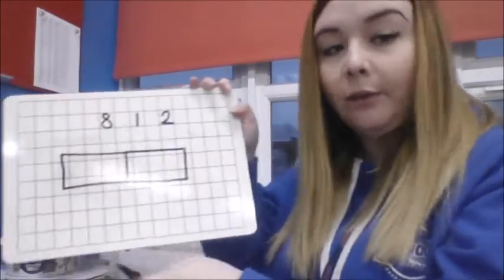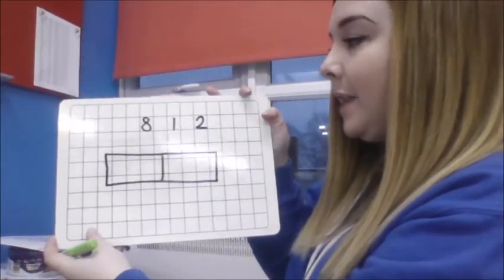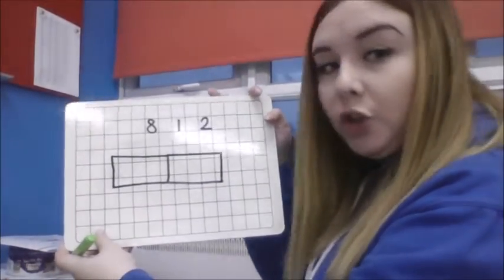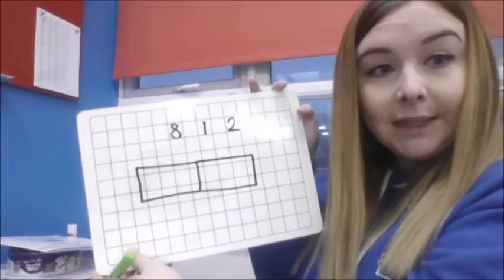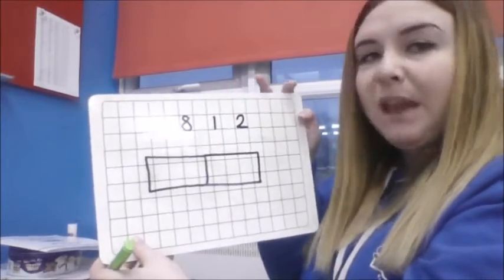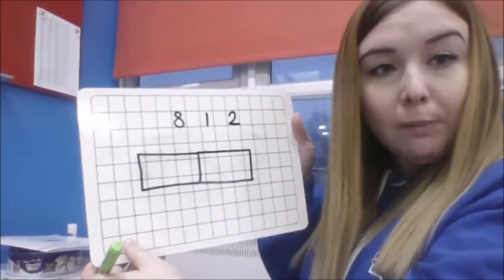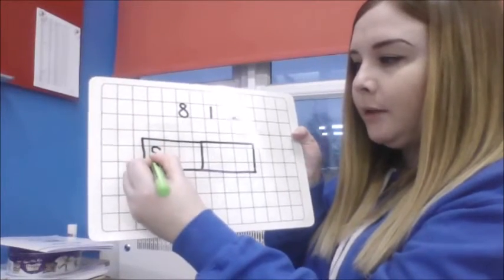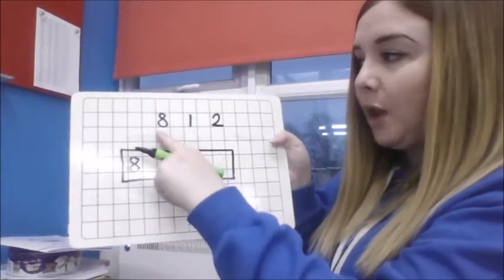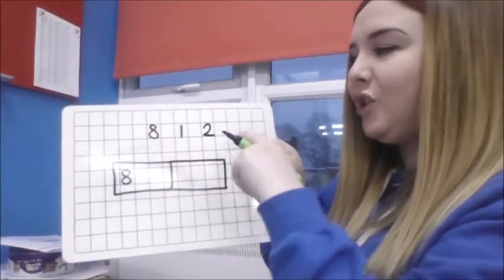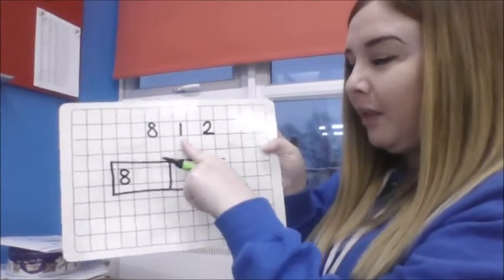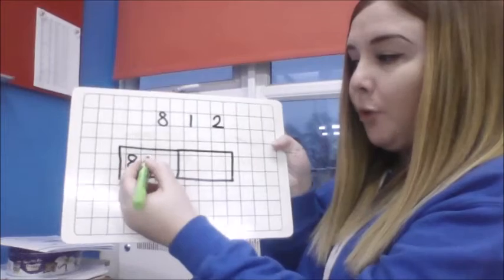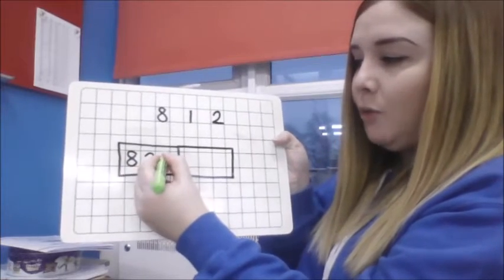So I've got an example on my whiteboard. I've got the digits 8, 1 and 2. And I've got to start by making my biggest number. Now to make my biggest number I know I've got to put my biggest digit first and that's my number 8. And then after that it's going to be my next digit. Now I know that 2 is bigger than 1 so if I put the 2 there and then the 1 that makes my biggest number.